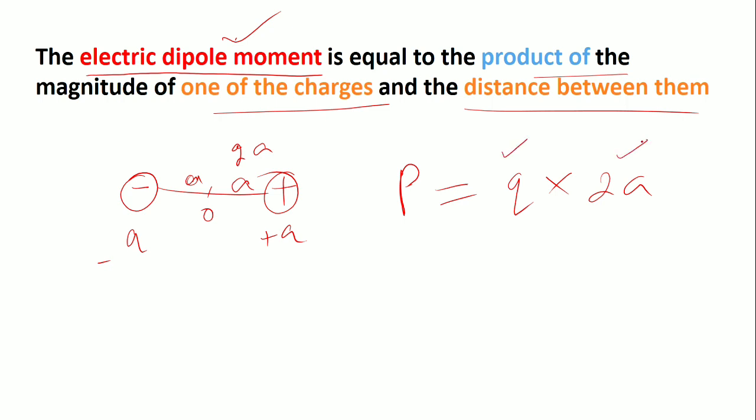The unit of dipole moment: charge is coulomb, distance is meter. So the unit is coulomb-meter.